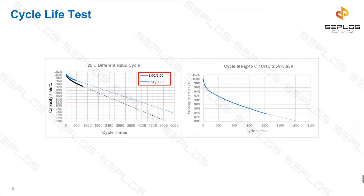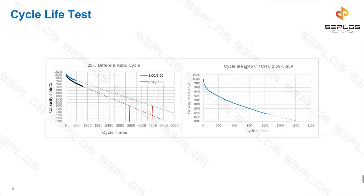If you increase the discharging current rate, you decrease your battery cycle life and increase the risk of your battery pack. As the test report shows, if you charge and discharge at 1C you will retain 18% DoD after 3,600 cycles. But if you charge and discharge at 0.5C, you will retain 18% DoD after 4,800 cycles. Shallow charging and shallow discharging is also beneficial.